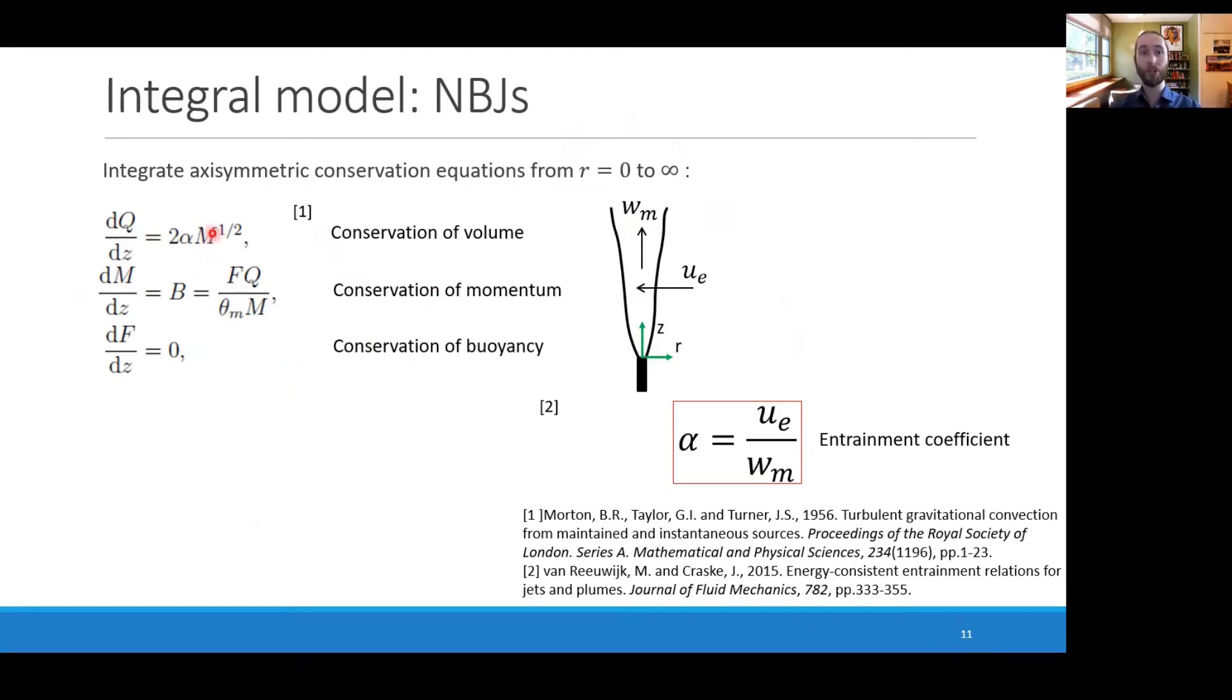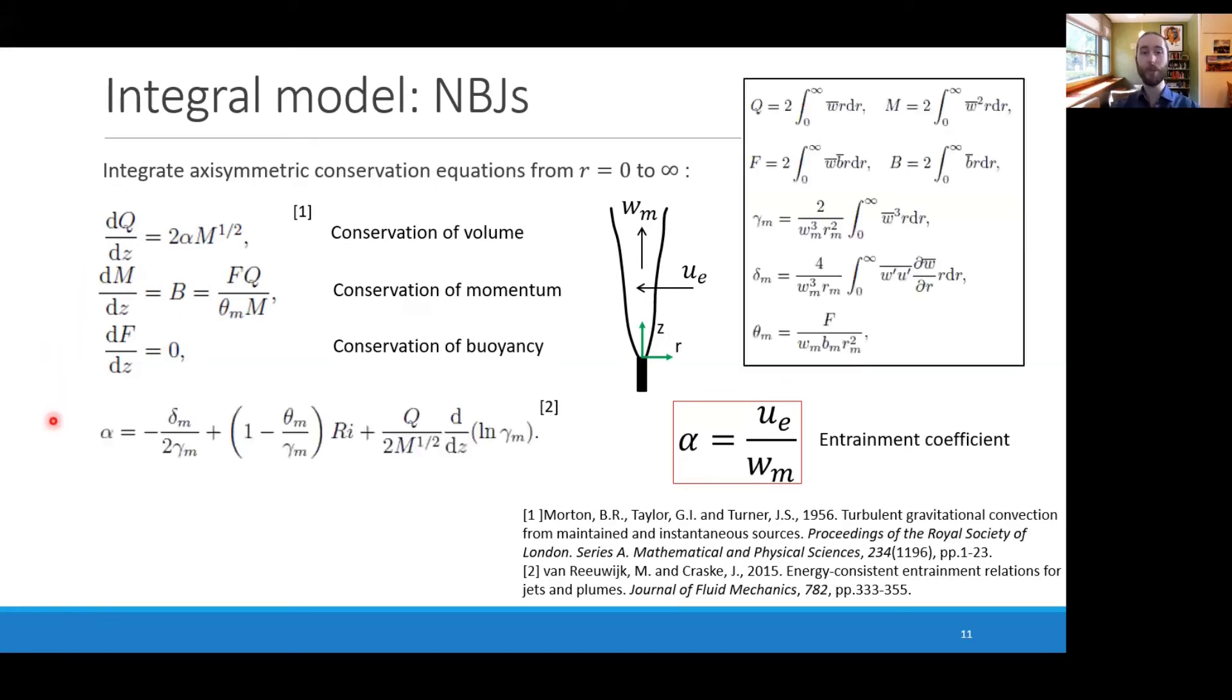I'd like to draw your attention to alpha, this term here, which is called the entrainment coefficient. This is the ratio between the velocity entrained into the jet to some axial characteristic velocity at that height. By combining these three equations with a fourth for mean axial kinetic energy, we can derive an expression for this entrainment coefficient.